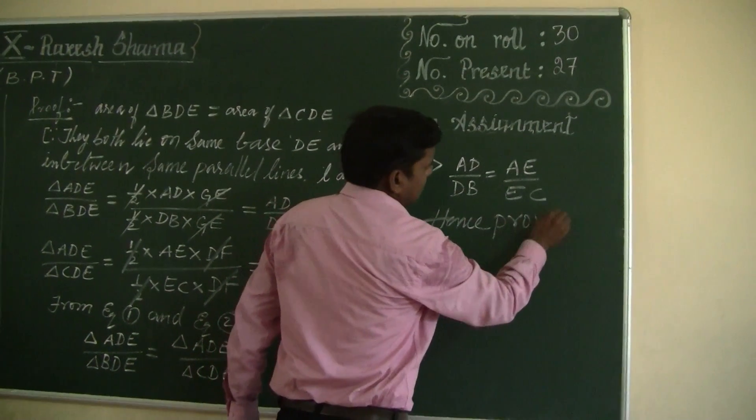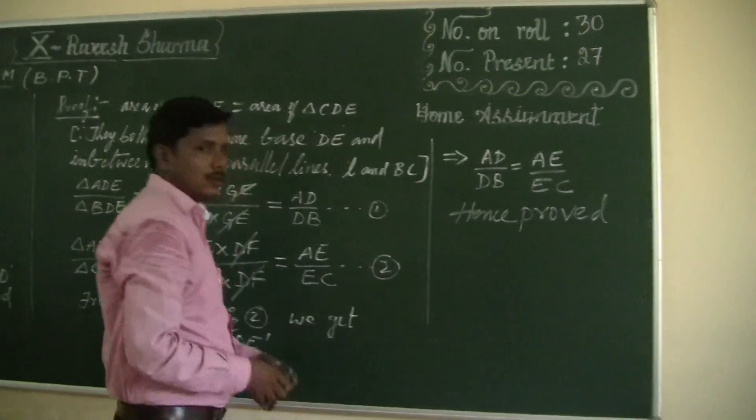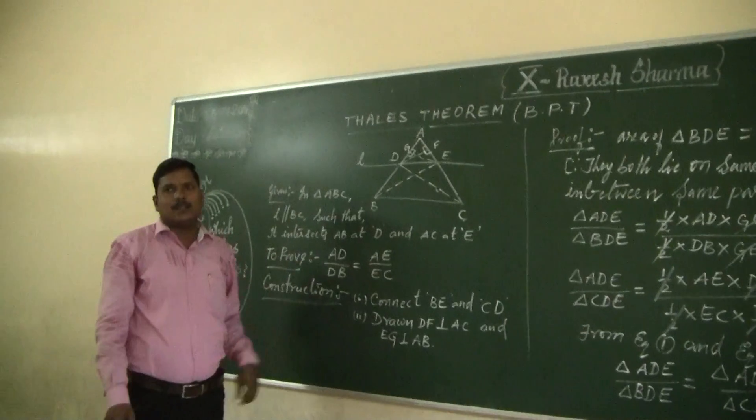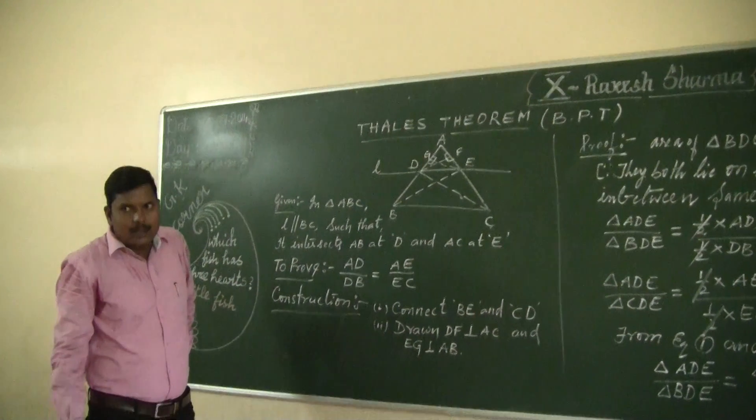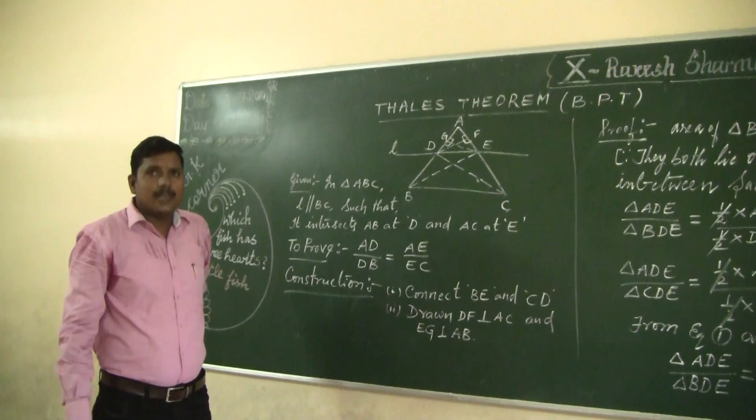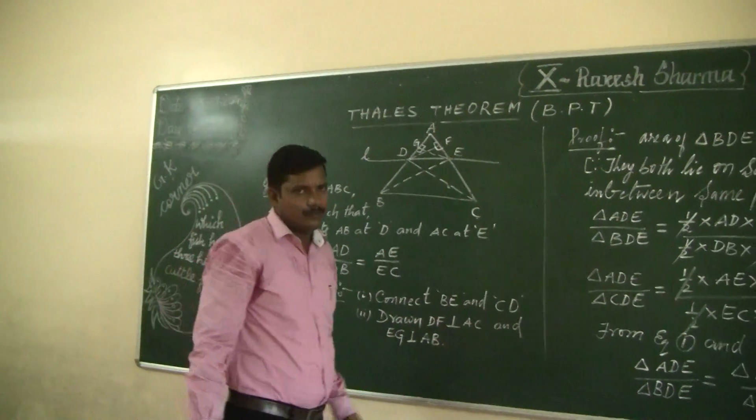So what we have observed, a line drawn parallel to one side of a triangle divides the other two sides in the same ratio.